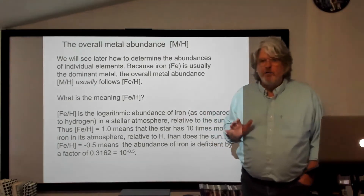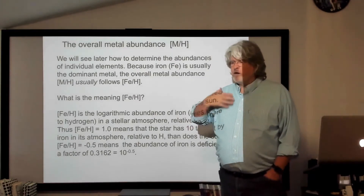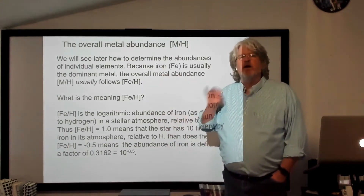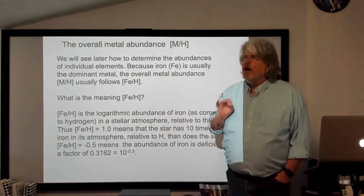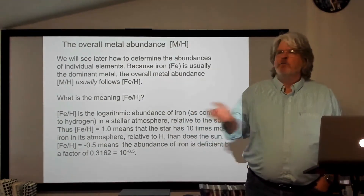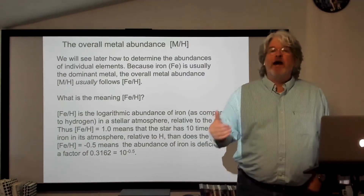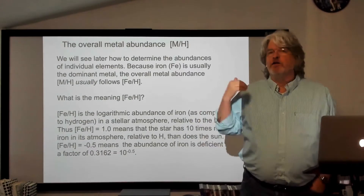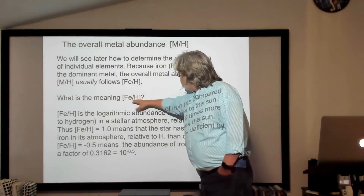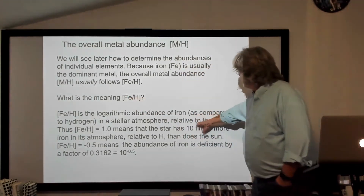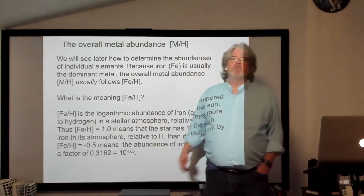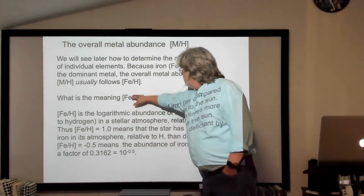You have to be explicit about what you're talking about. With spectroscopists talking about the compositions of stars, we almost always use number abundances because it's the individual atoms and the interaction of their electrons with photons that are creating the features in the spectrum we see. It doesn't depend on the mass of the atom — it depends on how many of those atoms I have in my box of gas that are doing the absorbing or emitting. So we talk about number abundances, and this bracket notation Fe over H is the logarithmic abundance of iron compared to hydrogen in the stellar atmosphere relative to the sun.